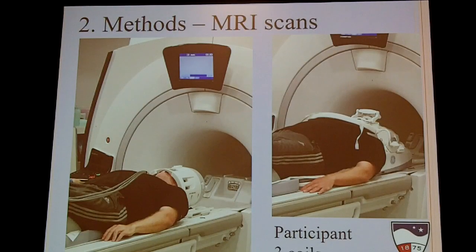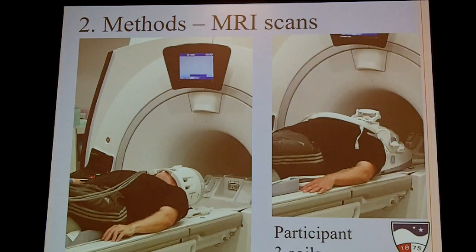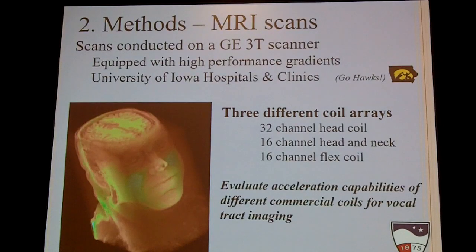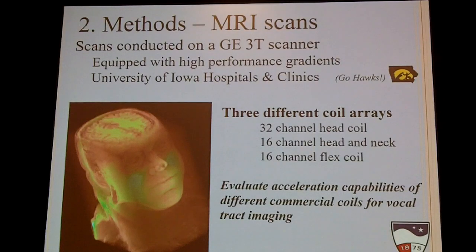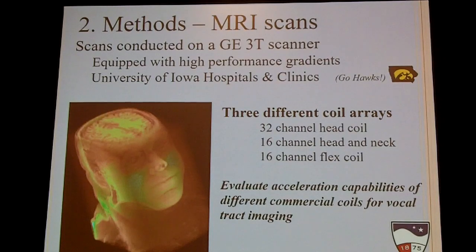We had one participant — whose voice I'm very familiar with — get scans in October and also earlier this month at the University of Iowa. That's me. We tested three commercially available coils for vocal tract imaging. The scans were conducted on a GE 3T scanner equipped with high-performance gradients at the University of Iowa Hospital. We tested a 32-channel head array, a 16-channel head and neck coil, and a 16-channel flex coil to evaluate their acceleration capabilities.